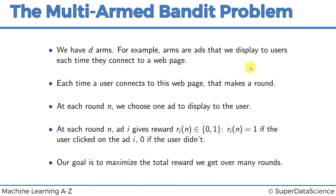We've got d arms — arms are ads displayed to users each time they connect to a web page. Each time a user connects is considered a round, and at each round we choose which ad to display. The ad gives us a reward: one if the ad is clicked, zero if not. In the case of actual bandits, it'll be a monetary reward. Our goal is to maximize the total reward we get over many rounds.